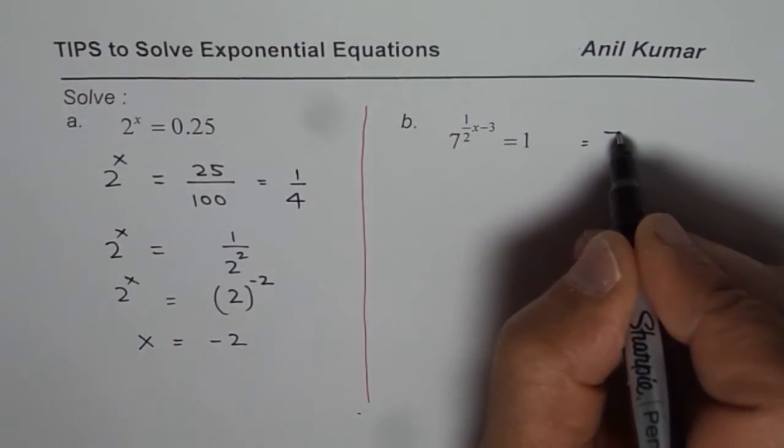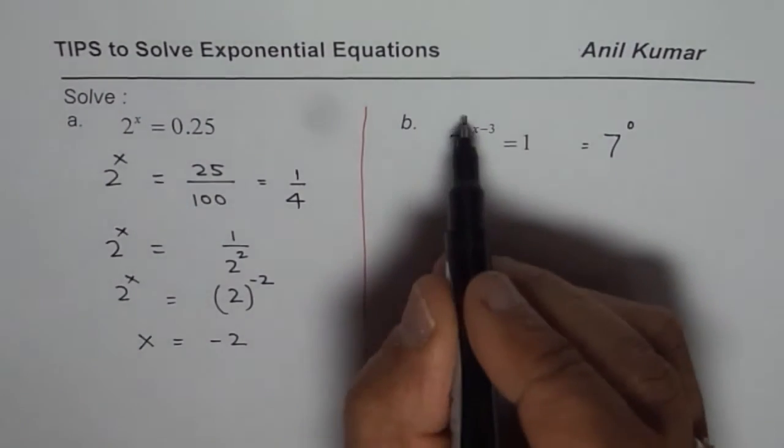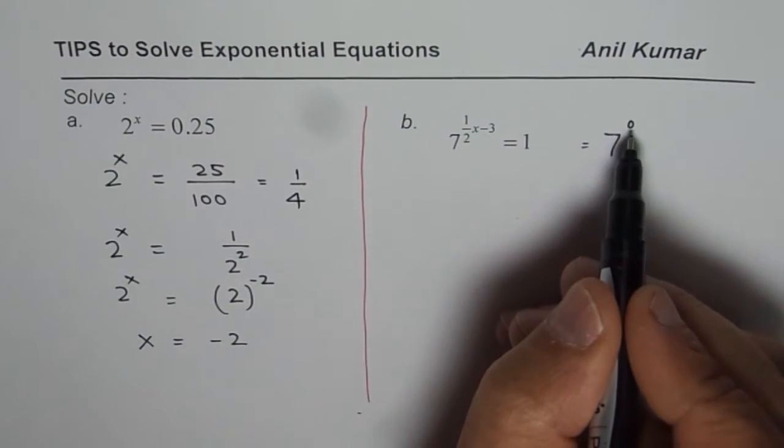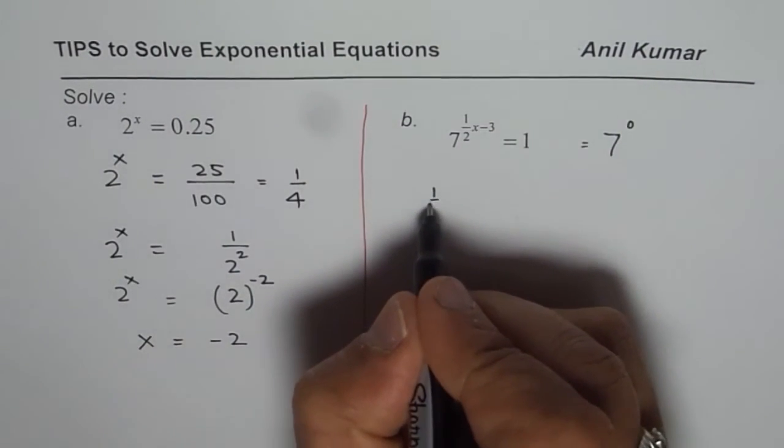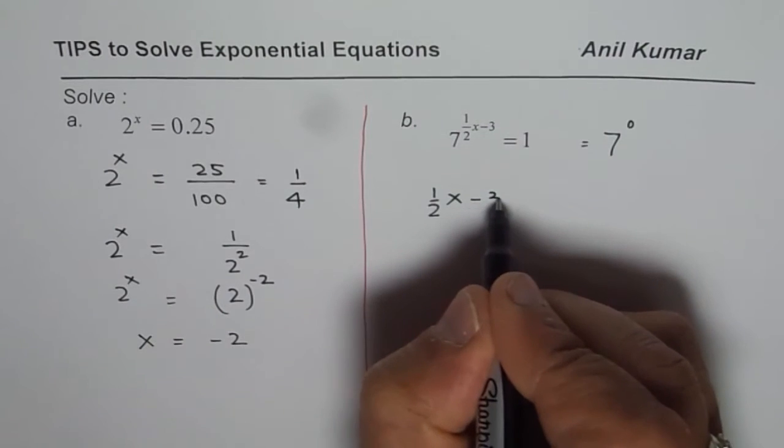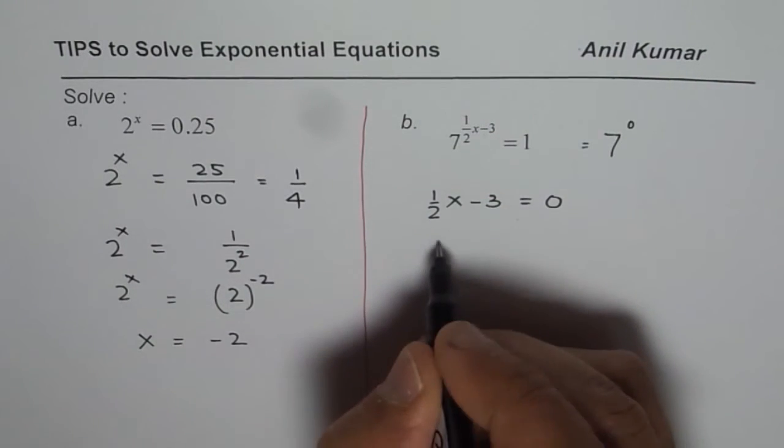We know anything to the power of 0 is 1. Therefore, x/2 - 3 should be 0. So x/2 - 3 = 0, and now we can solve for x.